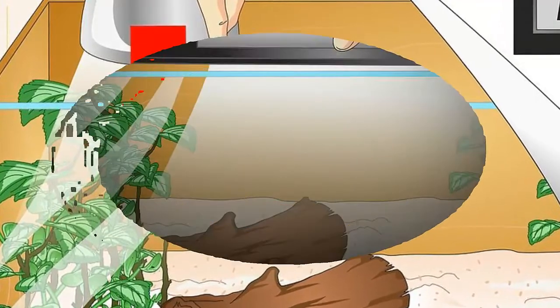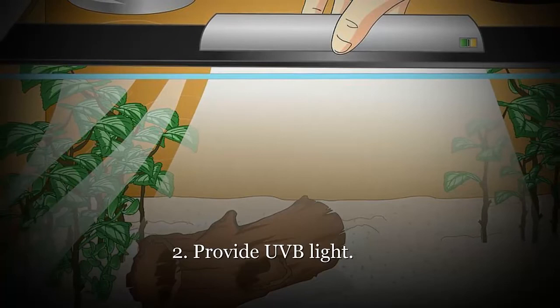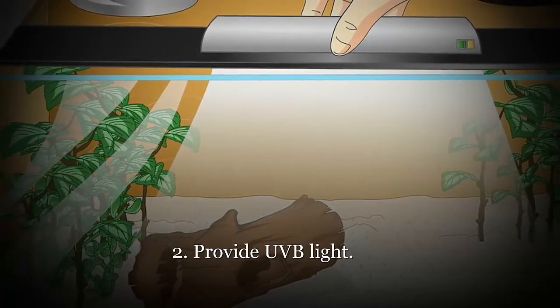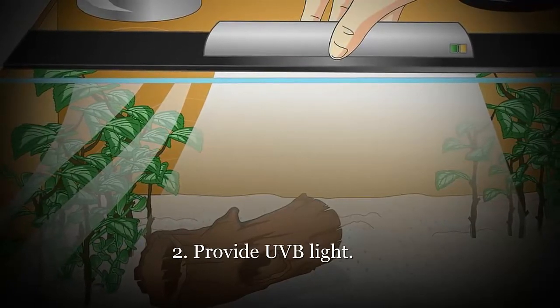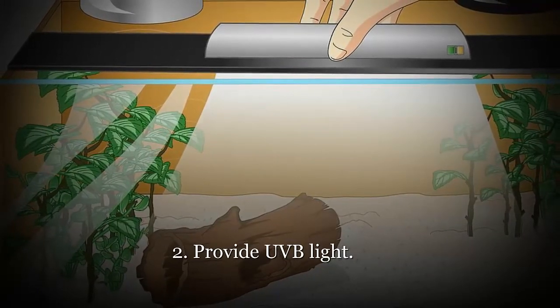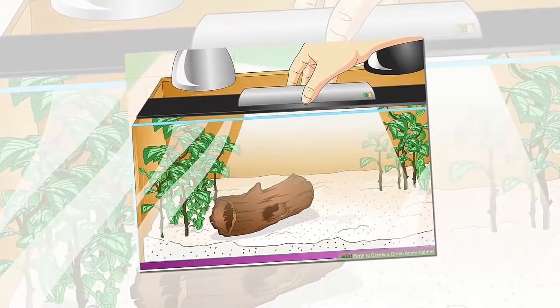Insufficient exposure to UVB will lead to mineral deficiencies and physical problems for your green anole. Your lizard will decide when to bask in the light and when to sit in the shade, but you need to make the light available for him. The sun is the best source of ultraviolet light.